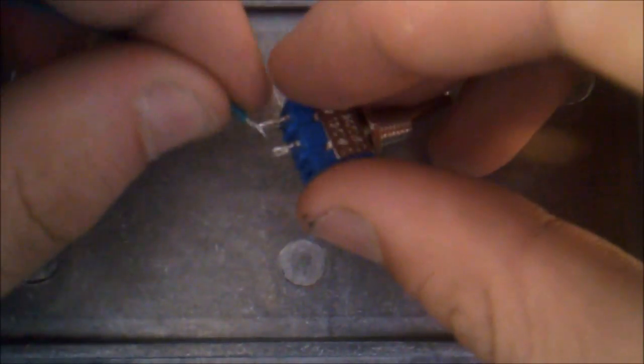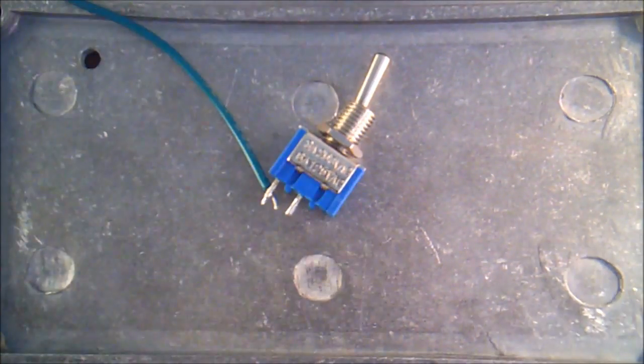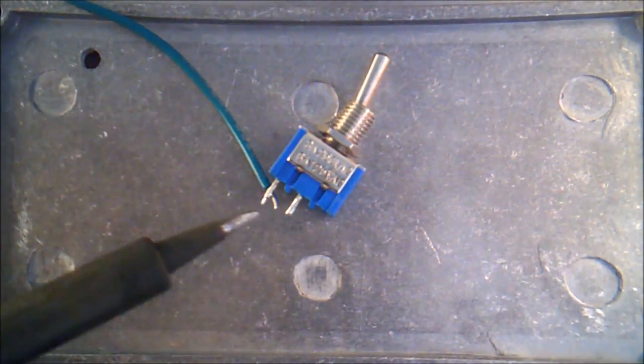Now we're going to solder the other end of that same wire to one of the pins on the ground lift switch. It doesn't matter which pin, it's just an on-off switch.